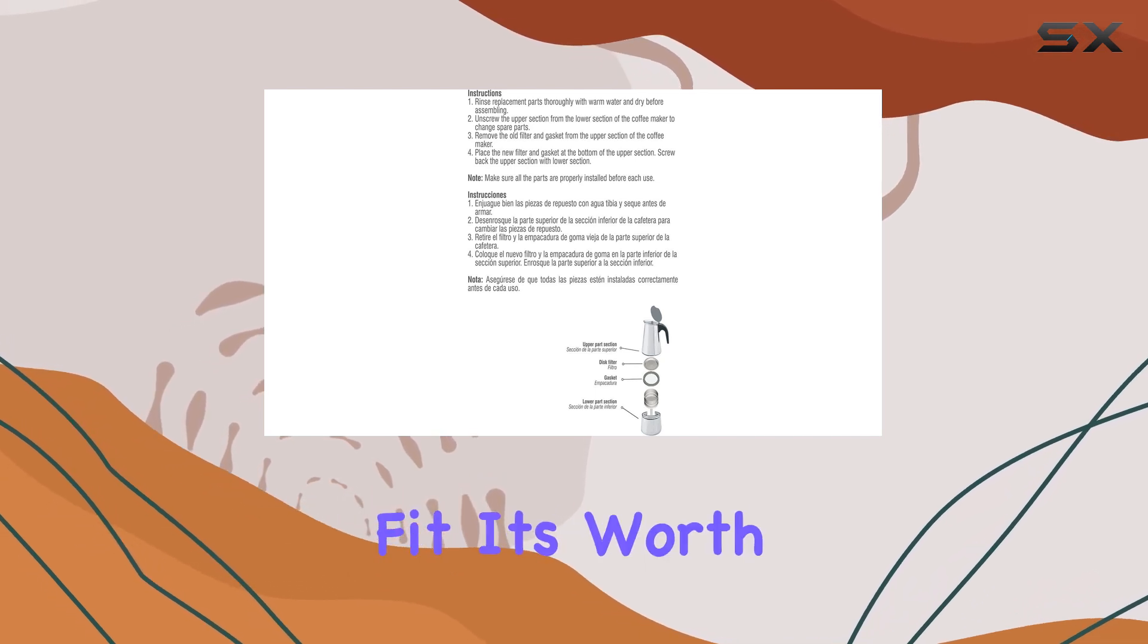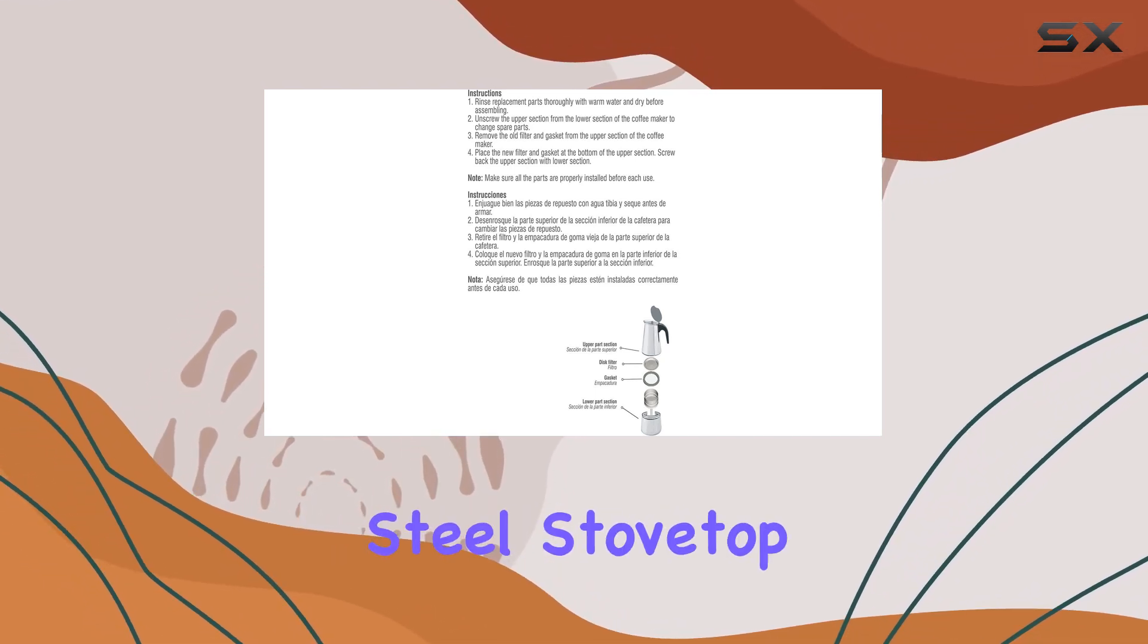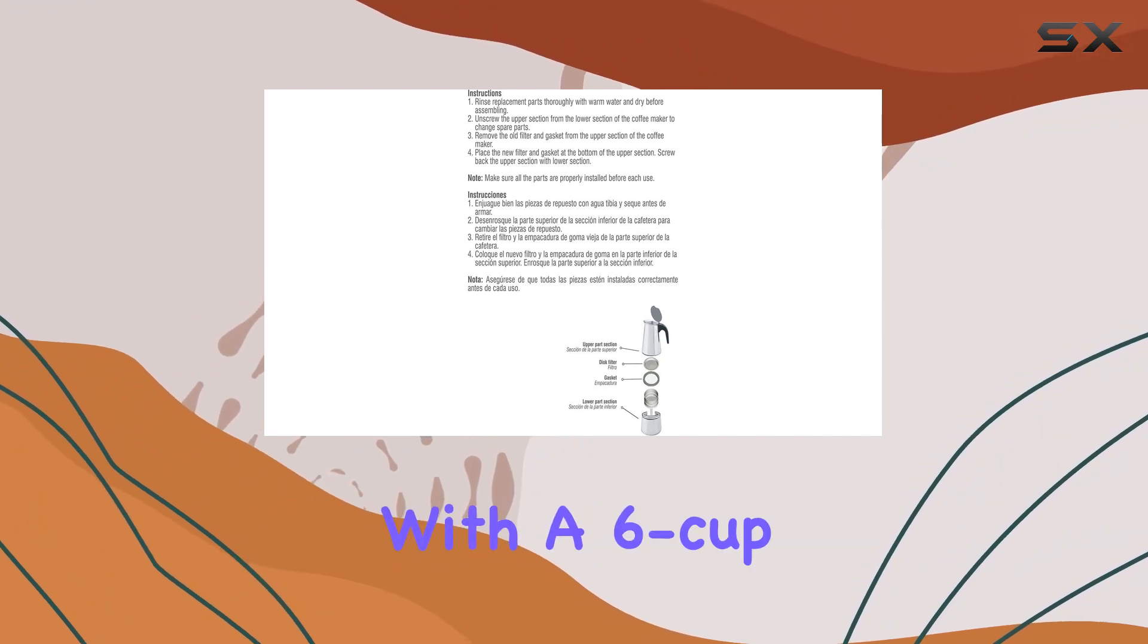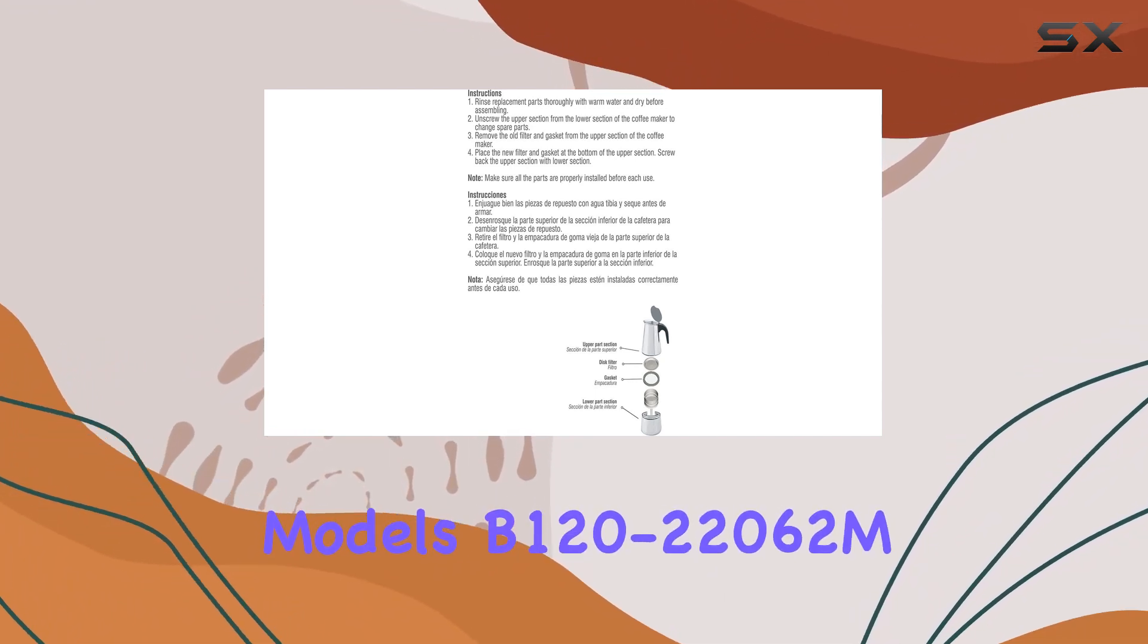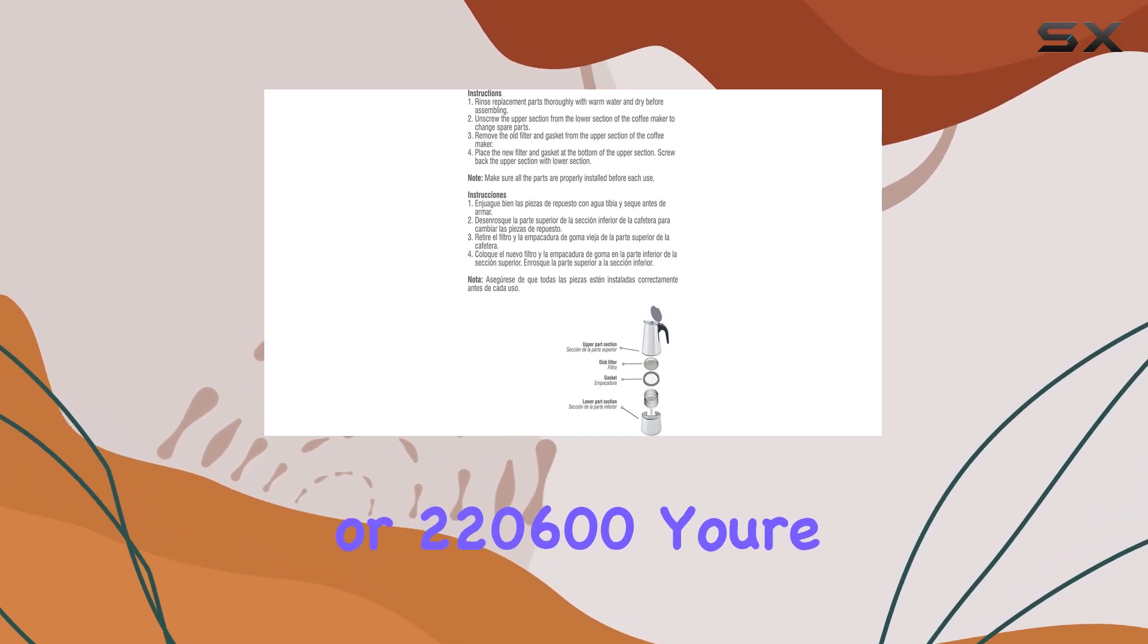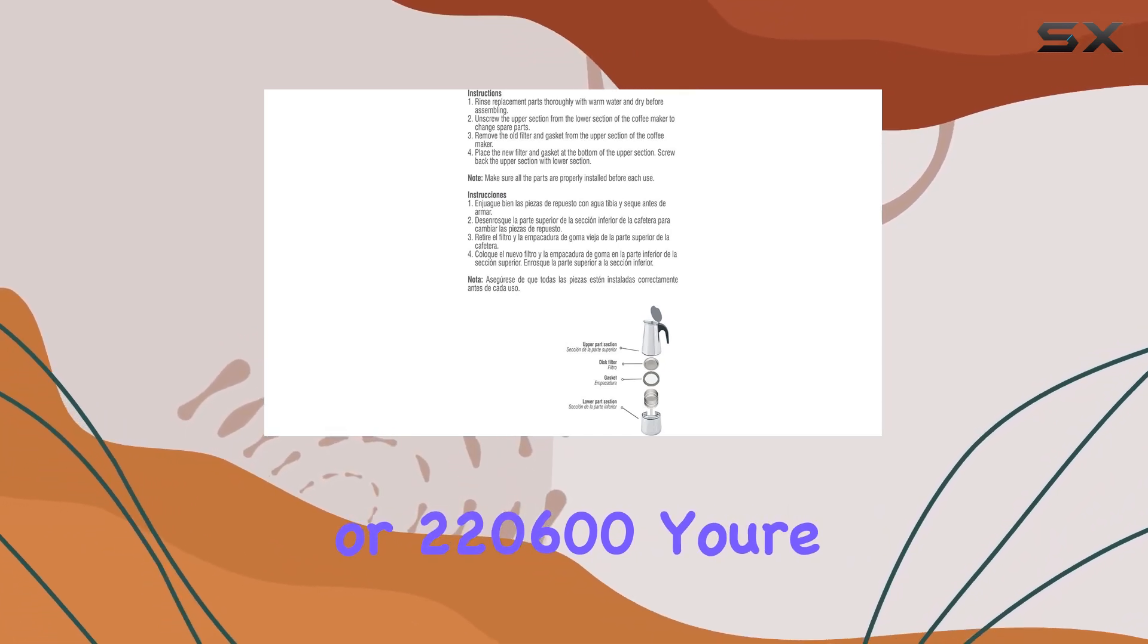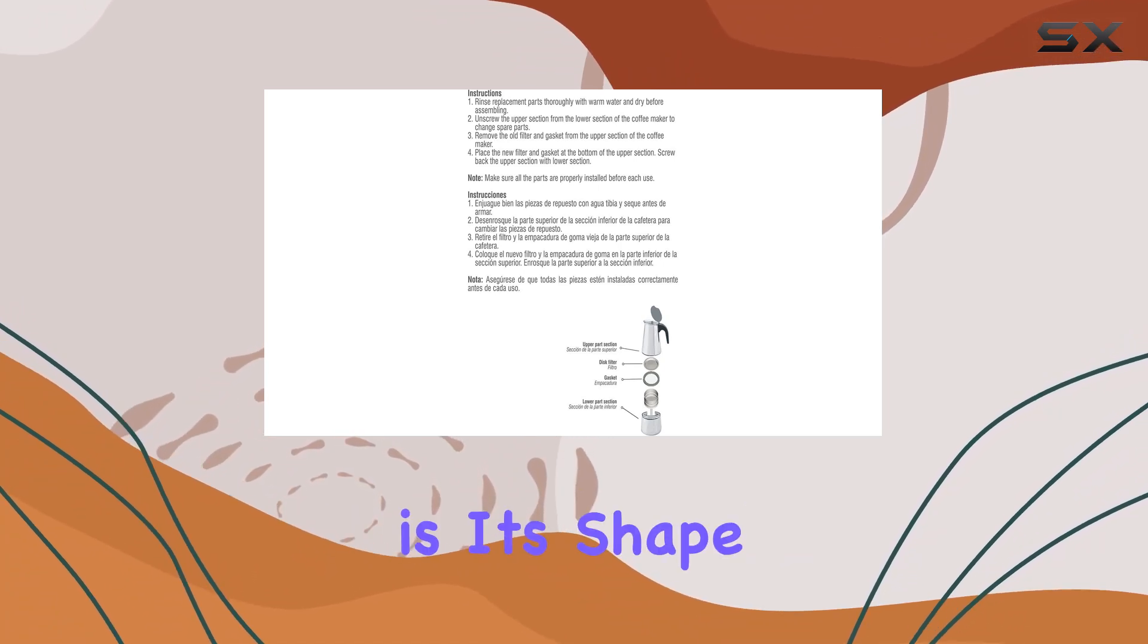Speaking of fit, it's worth noting that this set works exclusively for stainless steel stovetop coffee makers with a 6-cup capacity. So if you've got one of the compatible models B120-22062M or 220600, you're golden. One thing I appreciate about this product is its shape.